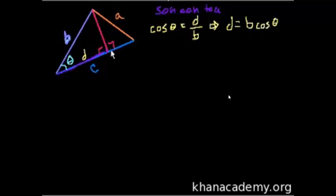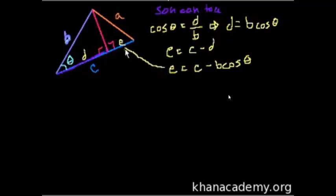Now let's call this side E, right here. Well what's E? Well E is this whole C side minus this D side, right? So E is equal to C minus D. We just solved for D. So side E is equal to C minus B cosine of theta. So that's E. We got E out of the way.